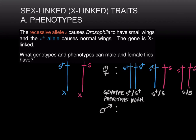The heterozygote will have the phenotype of the dominant allele. We've been told that the small wings allele S is recessive, which makes S-plus dominant, and therefore the heterozygote will also have normal wings. The third case — homozygous for the recessive S allele — means you have two copies of the small wings allele, so this individual will have the small wings phenotype.